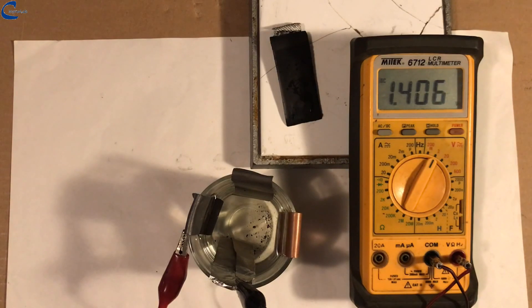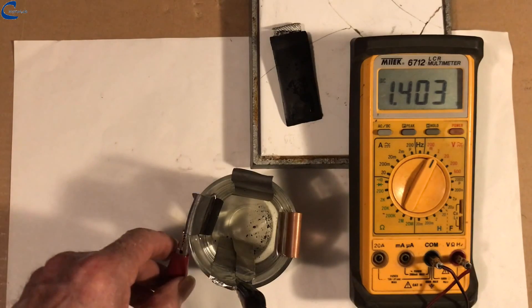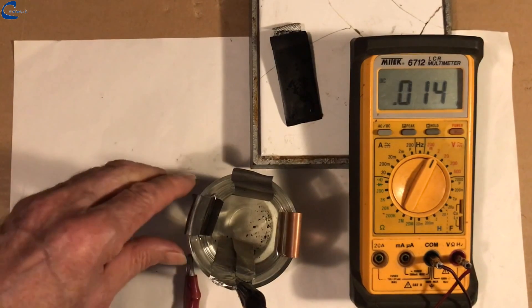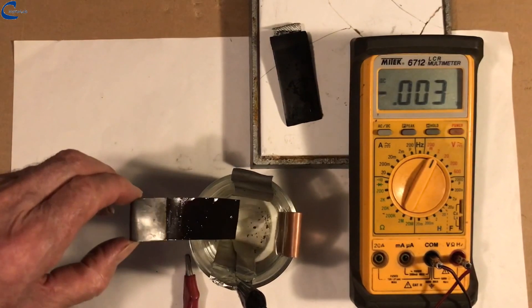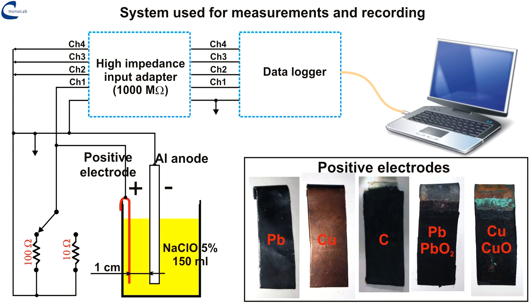Now all that remains is to move on to the tests under load of the cell. To evaluate the validity of a battery cell, it is always necessary to test it under load and record its voltage and current trend over long times - several hours and even days.